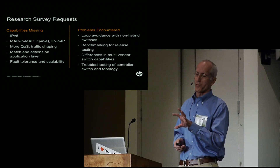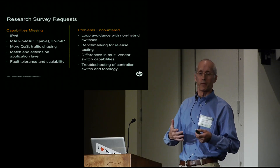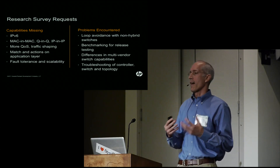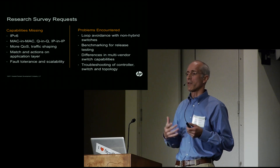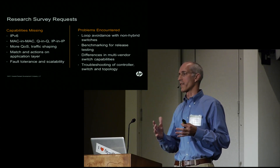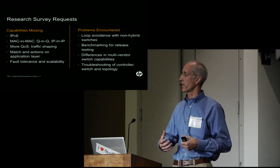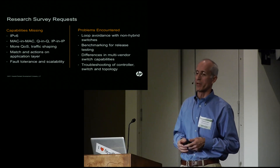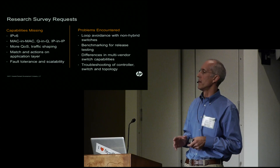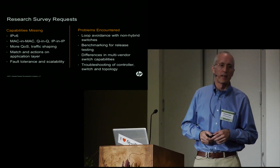The other question I asked was: what were the problems you encountered when deploying an OpenFlow network in your testbed? As I looked at the answers, there were things that I actually thought were good — a focus around getting it to work. There was some loop avoidance with non-hybrid switches, because the controller engineering isn't quite there in terms of preventing loops. There was benchmarking for release. These are kind of engineering things — figuring out how to qualify your controller and make sure it works, and troubleshooting and things of that nature. Really around engineering aspects that I think we need to iron out.